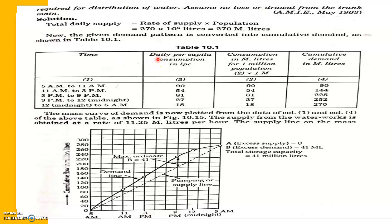First, you need to find out the total water supply. Total water supply is rate of supply multiplied by population — 270 lpcd times 1 million population gives 270 million liters. This is the total daily water supply. Now you need to set up a tabular column.